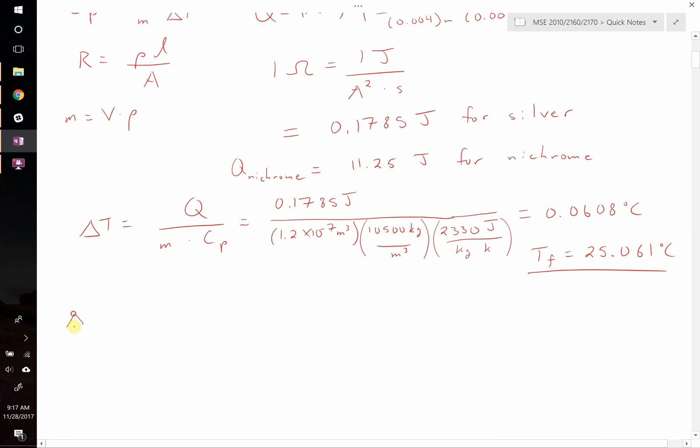Doing the exact same approach, we write that the delta T is going to be equal to now 11.25 joules. That's going to be divided by the same dimension, same volume, 1.2 times 10 to the negative 7 meters cubed. This time, the density of nichrome is only 8400 kilograms per meter cubed. And the specific heat is lower as well. It's only 450 joules per kilogram degree Kelvin.